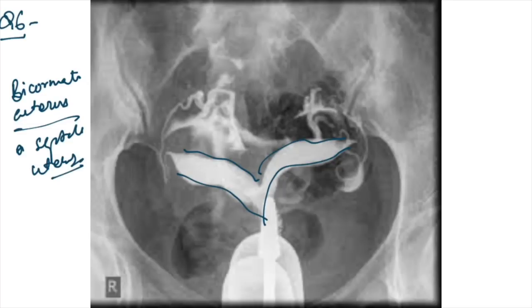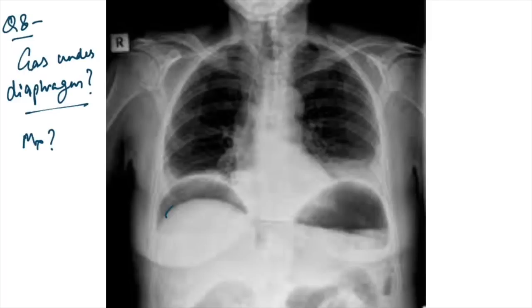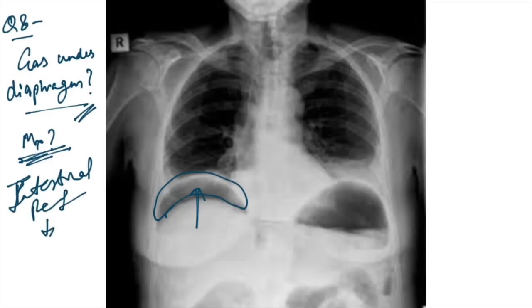This image was given. This is staghorn calculi - a urology question. In X-ray KUB was given, this is staghorn calculi, not any stricture. This question was given, just X-ray was given. Gas in the diaphragm can be seen, you can appreciate the gas. What will be the management? Gas in the diaphragm is due to intestinal perforation. Management is emergency laparotomy and proceed.